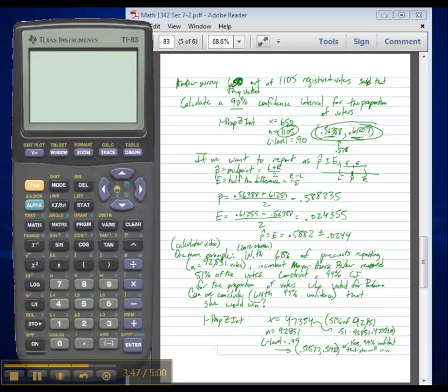So that's using the calculator to calculate confidence intervals for population proportions. We'll use the calculator to compute other types of confidence intervals as well in that same menu, but for proportions specifically, it's 1-Prop Z Int is the command that we want to use.